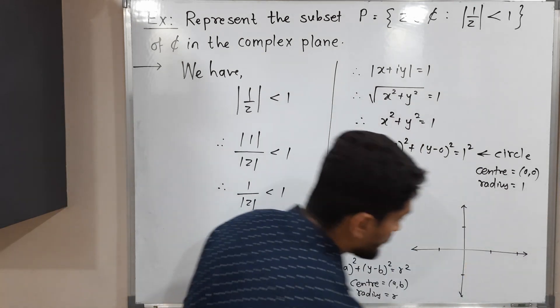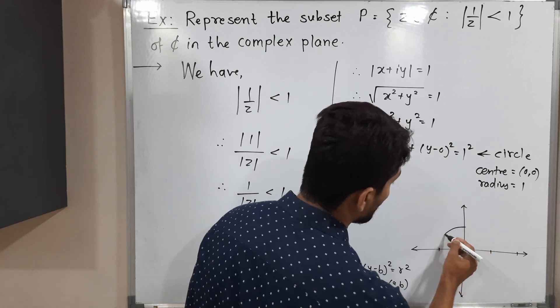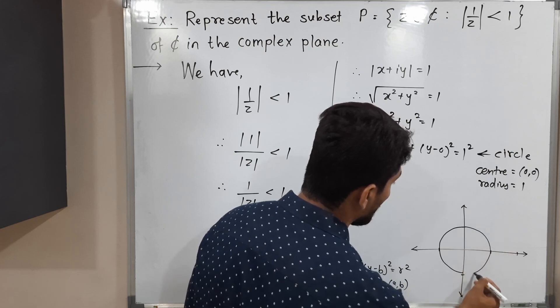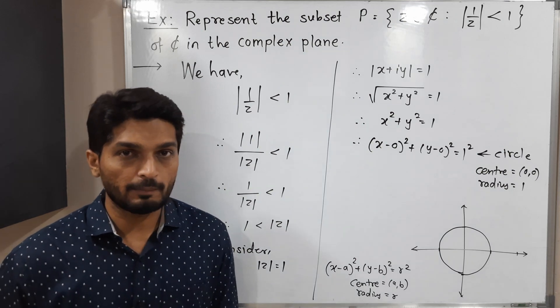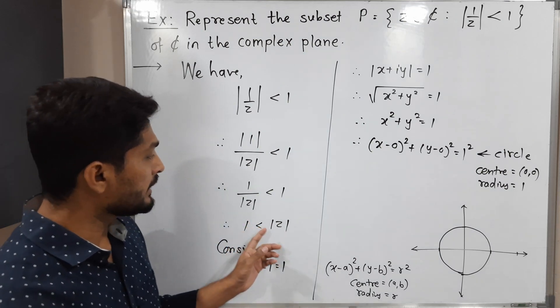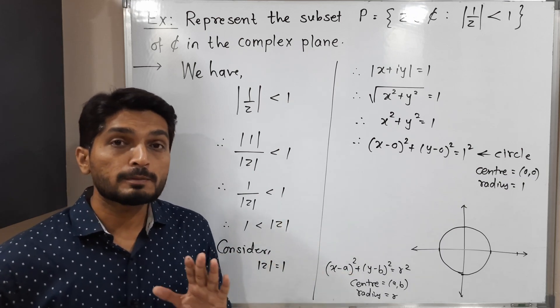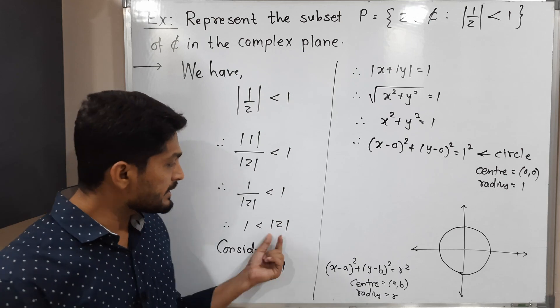We get a circle with center (0,0) and radius 1. Let me draw a rough sketch of it. But in the problem they have not given equality, they have given inequality. So |z| > 1 means the exterior part of the circle.